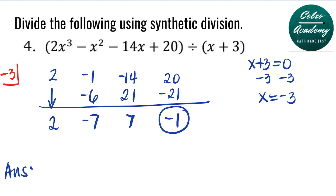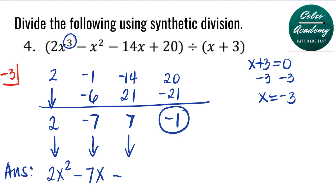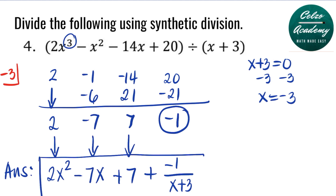The highest power of our dividend is 3, so the highest power of our answer is 2. Beginning with the coefficient 2, we have 2x squared. Next we have negative 7, so that's minus 7x. Then we have plus 7, the constant. The remainder is negative 1, so we write plus negative 1 over the divisor x plus 3, or the same thing as minus 1 over x plus 3. So this is the answer for question number 4.